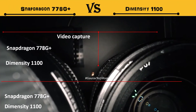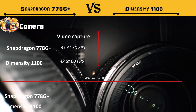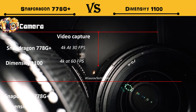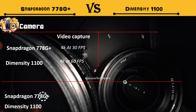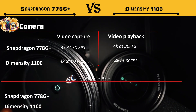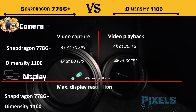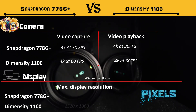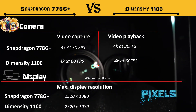For video playback, both processors support 4K, but Dimensity 4K at 60 FPS is supported. For the display, both Snapdragon and Dimensity support a resolution of 2520 by 1080 pixels.